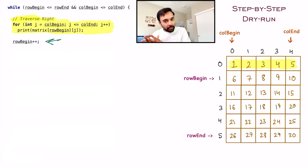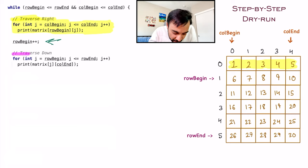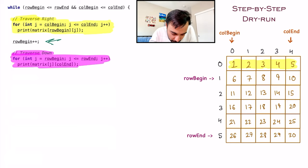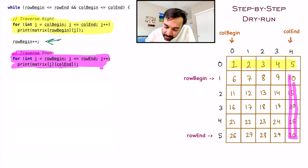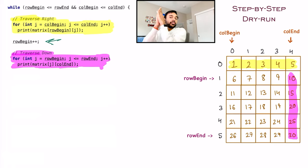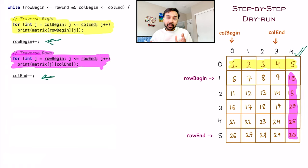Now row_begin points at row 1. Continuing the spiral order, you have to traverse this column — going downward. In this for loop, you start from row_begin and end at row_end, going in a downward direction. When this loop runs, you iterate all elements downward: 10, 15, 20, 25, all the way to 30. You have now taken care of the last column. So naturally you do column_end-- , moving column_end one value back since those elements are covered.